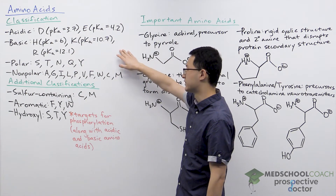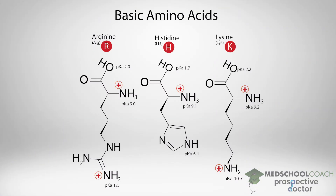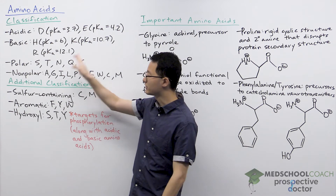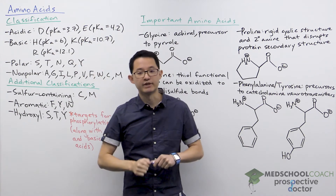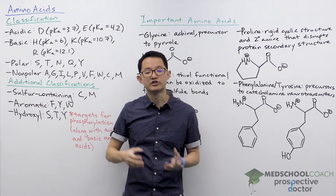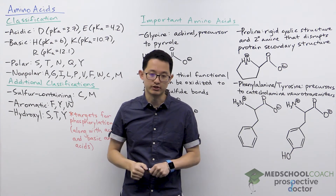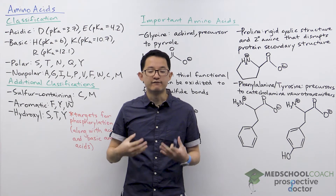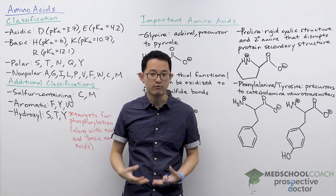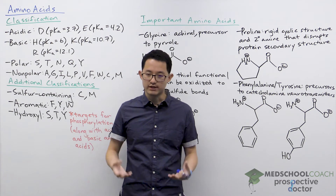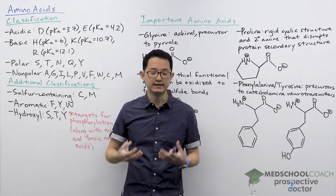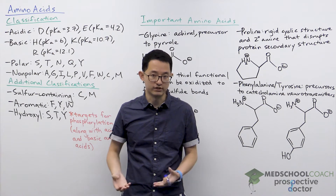There are three basic amino acids: histidine, lysine, and arginine. Histidine has a side chain pKa of 6, lysine has a side chain pKa of 10.7, and arginine has a side chain pKa of 12.1. In subsequent videos we're going to focus more on these acidic and basic amino acids because their charge can change depending on the pH of the solution, which is important for determining protein function, how proteins fold, and how proteins move in machines like gel electrophoresis.